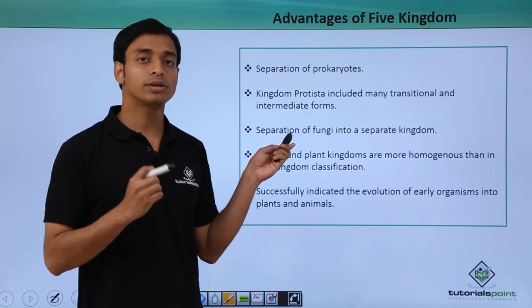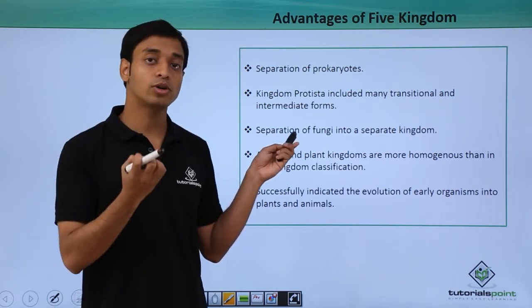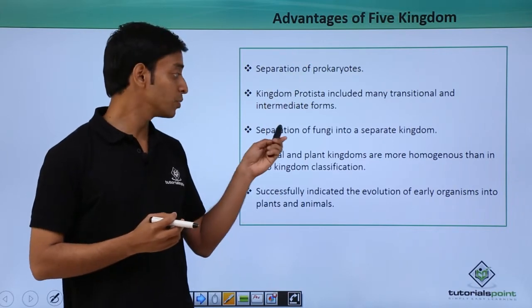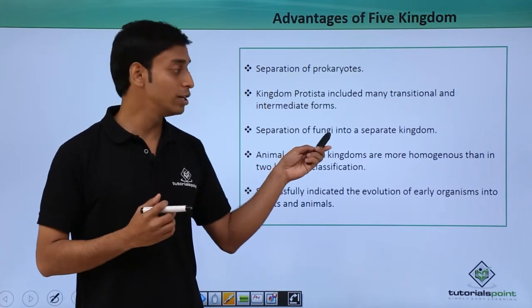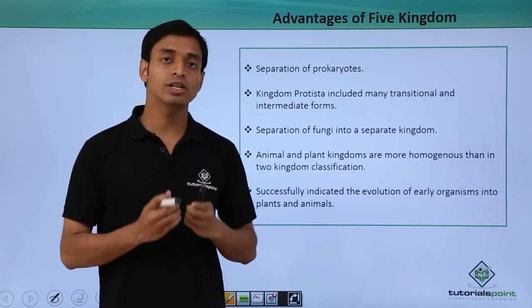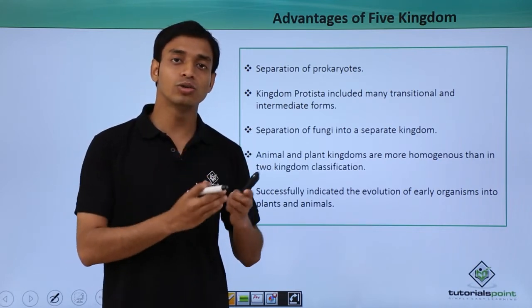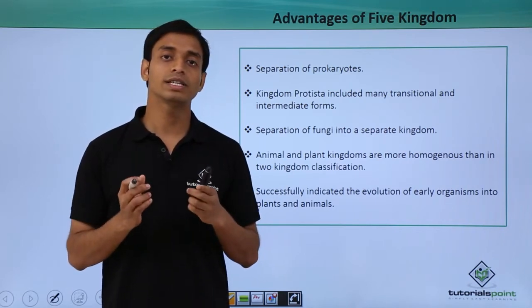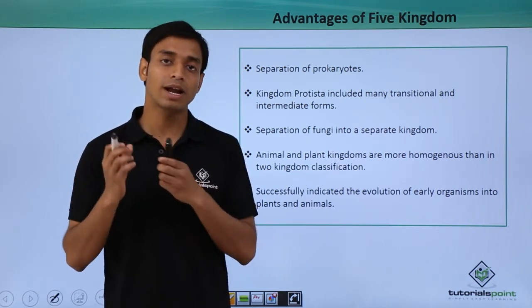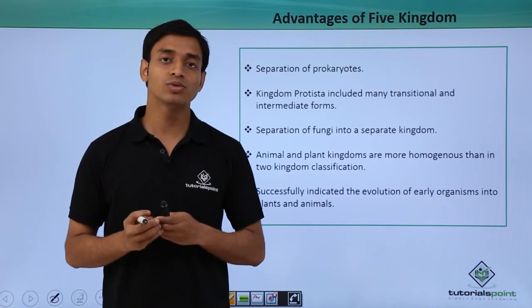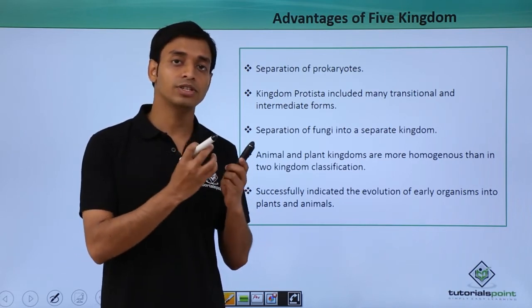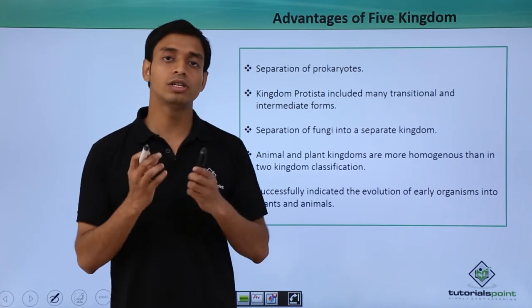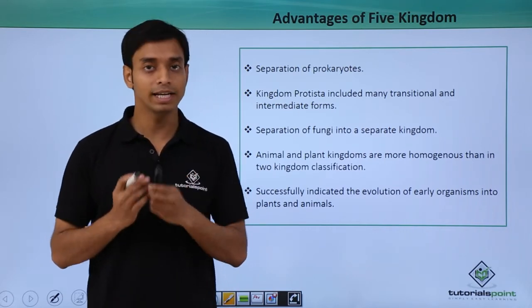Another very important characteristic of the five kingdom classification was the separation of fungi into a separate group. Initially, the fungi group was included in the plant kingdom, but fungi have many differences from plant cells and the plant kingdom. A very basic difference was that even though fungi have a cell wall, their cell wall composition was very much different from that of the plant kingdom.